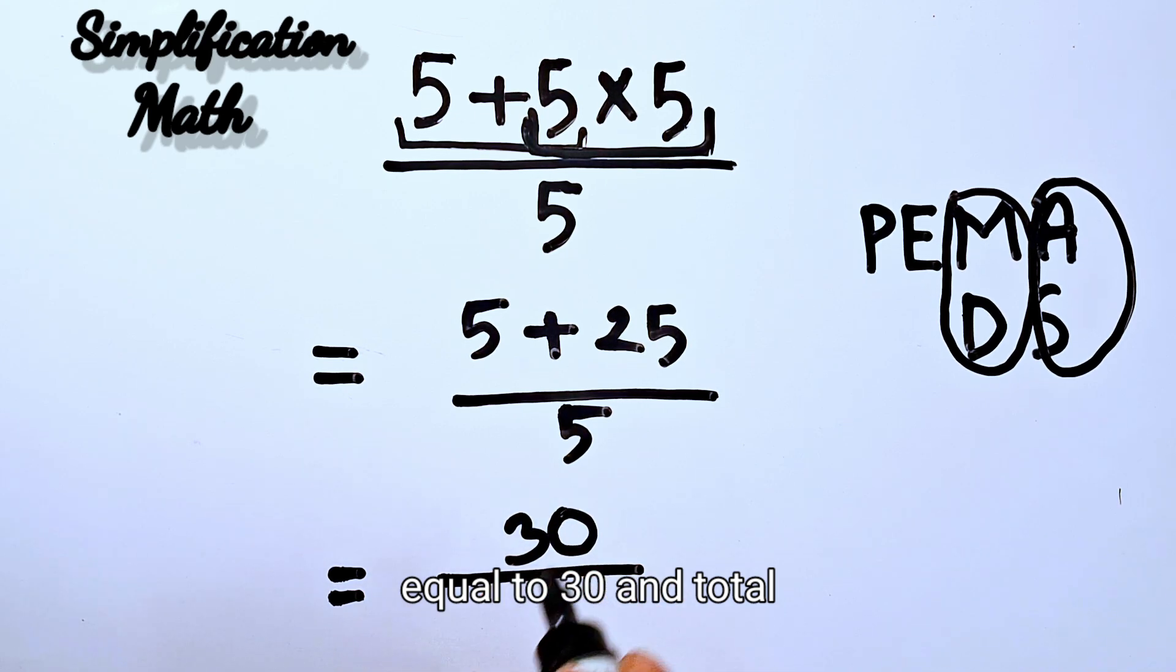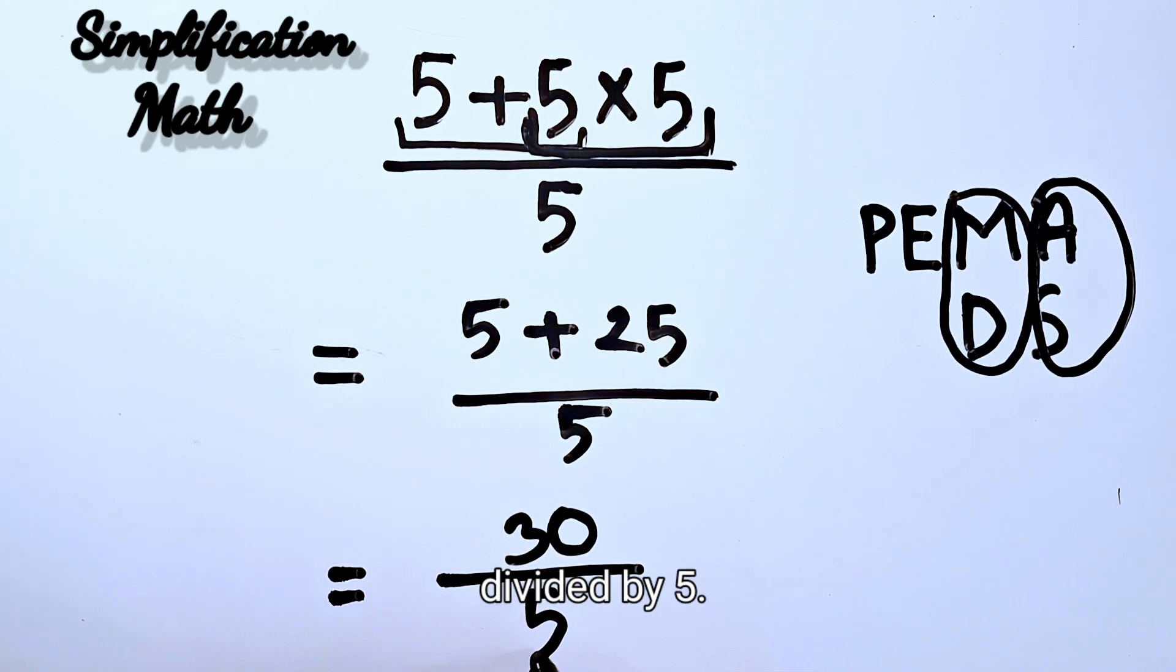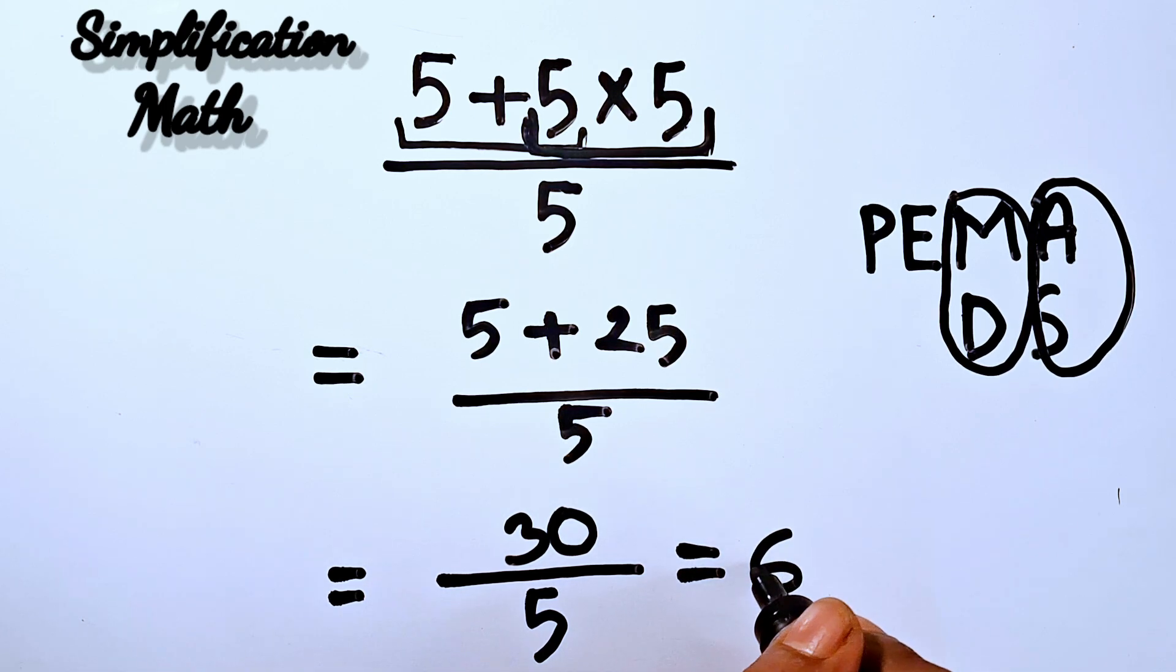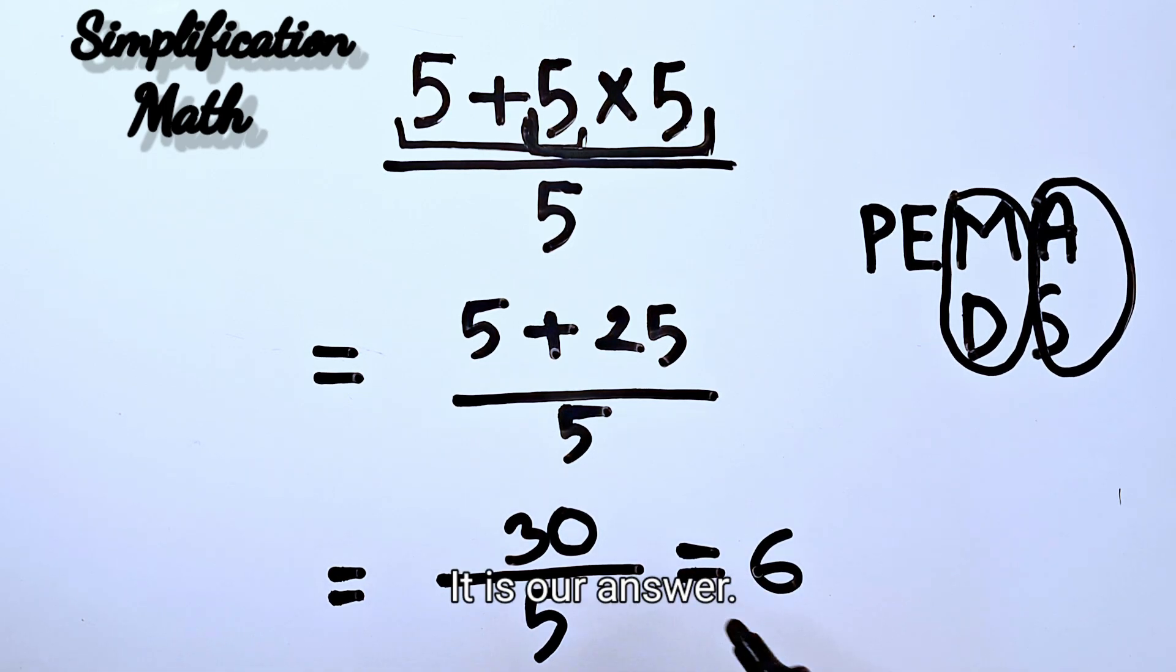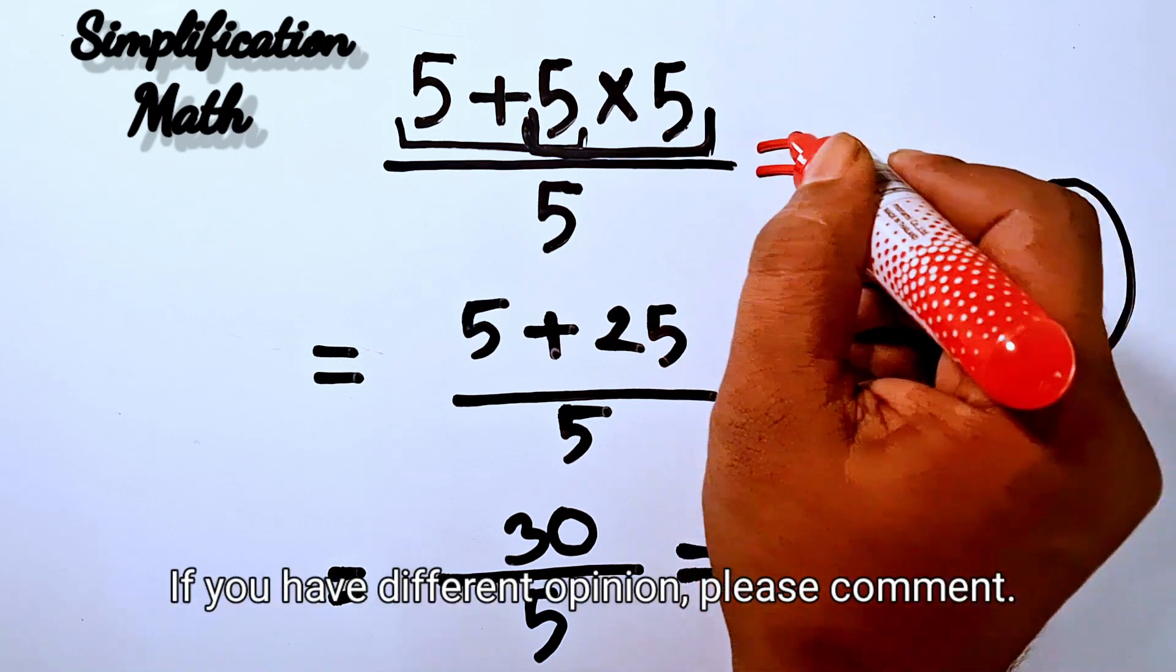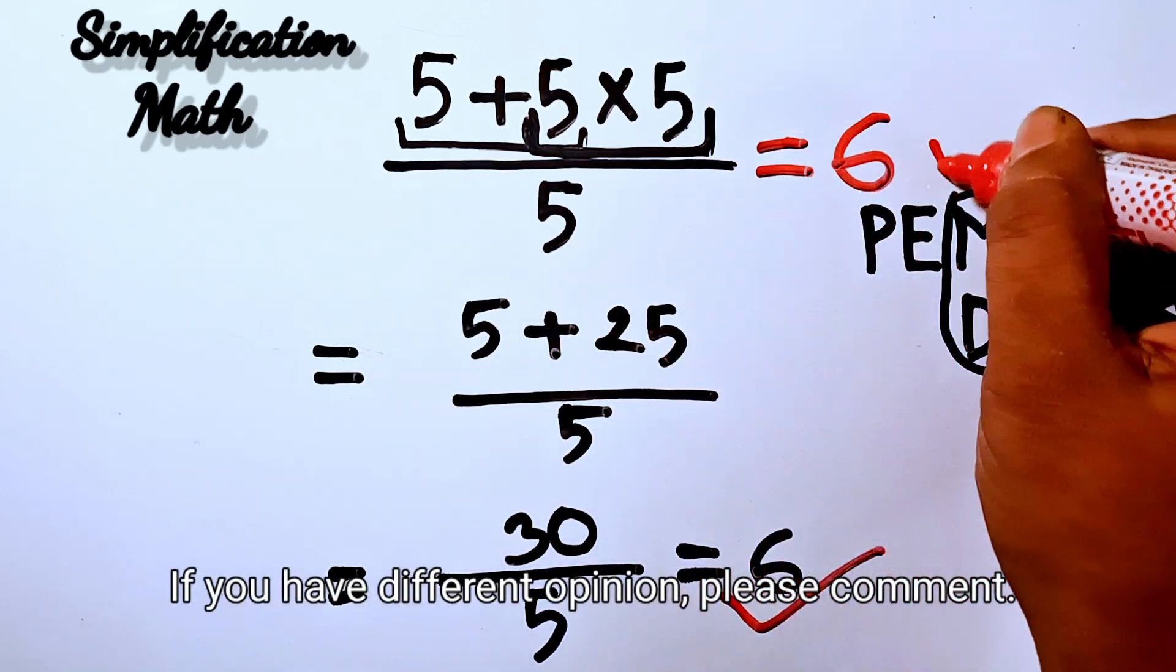30 divided by 5 equals 6. This is our answer. If you have a different opinion, please comment.